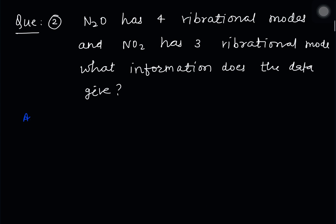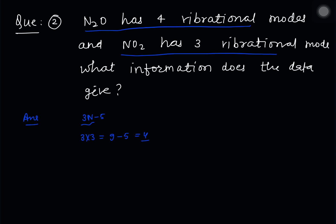In the second question, we are given that N₂O has 4 vibrational modes and NO₂ has 3 vibrational modes. The number of vibrational modes for a linear molecule is 3N−5. For N₂O with N=3 atoms, that gives 9−5 = 4. So N₂O has 4 vibrational modes, confirming that N₂O is a linear molecule.